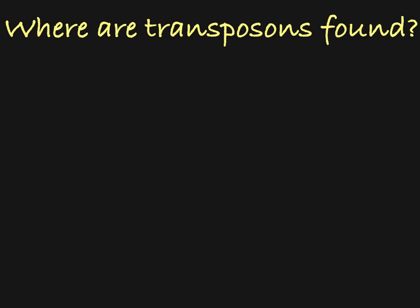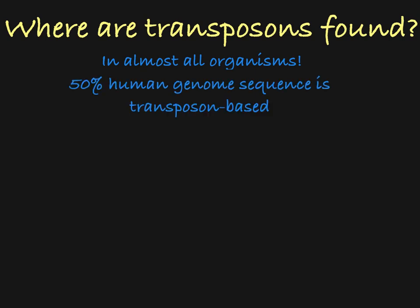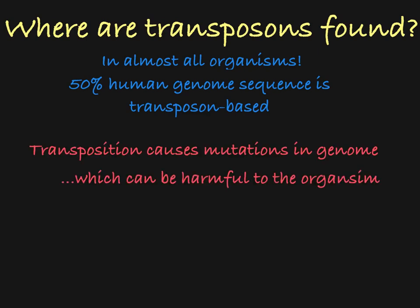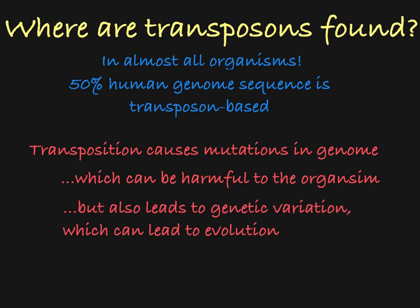Now that you understand the basics of transposons, you may be wondering how common they are in living organisms. Transposons are found in almost all living organisms. In fact, remnants of transposons make up around 50% of the human genome sequence. As you can imagine, the evolutionary pressure to silence active transposons in any cell is immense, as mobilization events are highly mutagenic and deleterious. That being said, their ability to move around a genome might have some evolutionary advantage, mainly because they allow for genetic variation when mobilized.